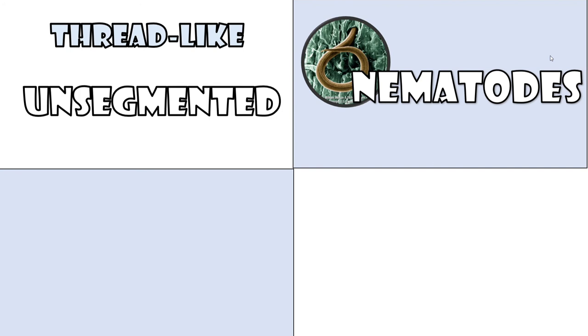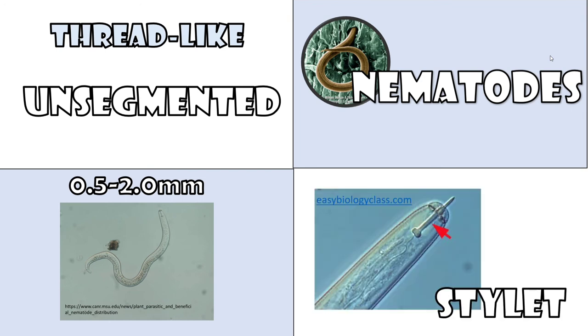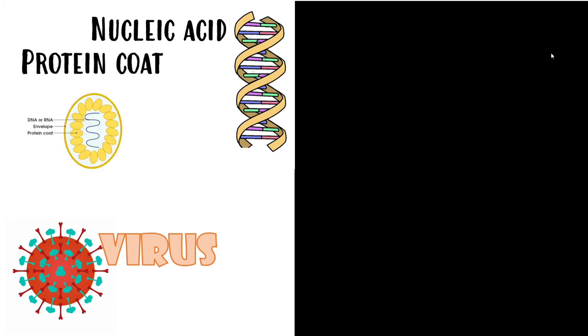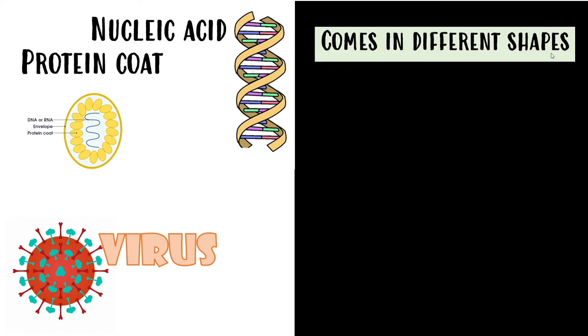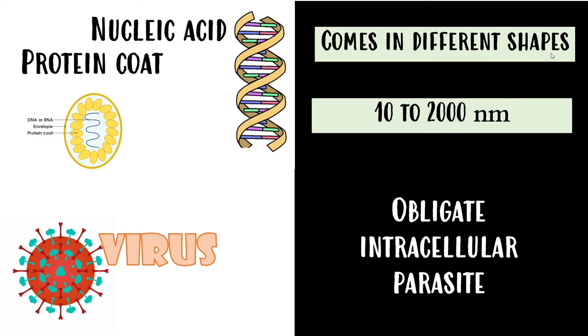Nematodes are thread-like, elongated, and unsegmented organisms, usually 0.5 to 2.0 mm in length. They have a stylet, which is a hollow needle-like spear. Virus: A virus is composed of nucleic acid — either RNA or DNA — encapsulated by a protein coat. It comes in different shapes with sizes ranging from 10 to 2,000 nanometers. It is an obligate intracellular parasite, therefore it replicates only in a suitable host cell using the host's protein-synthesizing machinery.